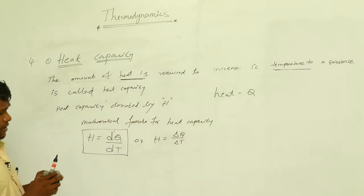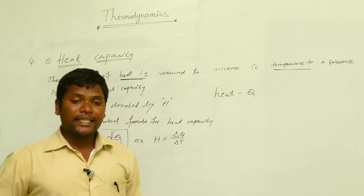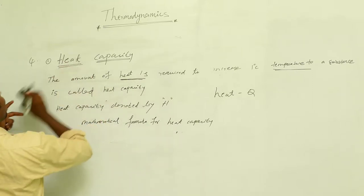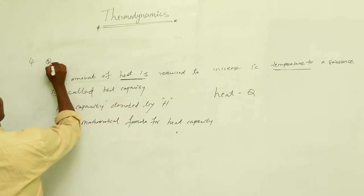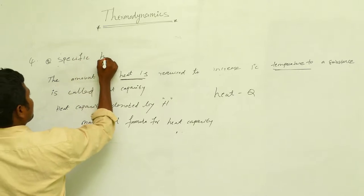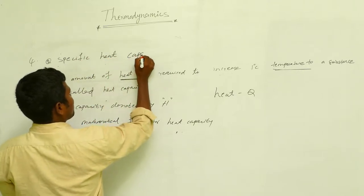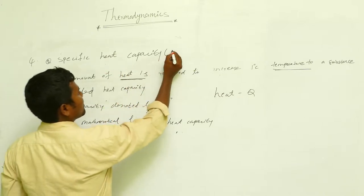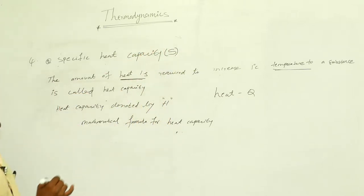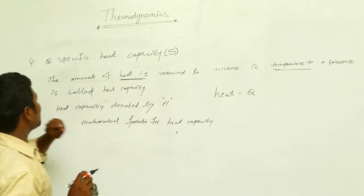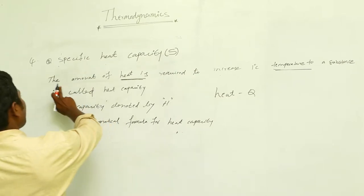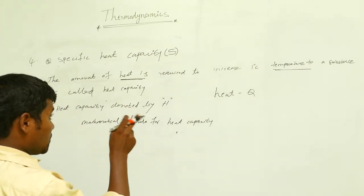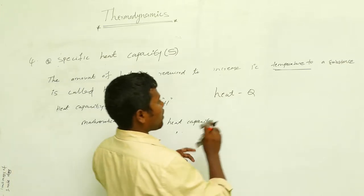Next is specific heat capacity. The same definition applies with a small change. Specific heat capacity is the amount of heat required to increase the temperature of one unit mass of a substance by one degree centigrade. The first letter of 'specific' is S, so we denote specific heat capacity by S.